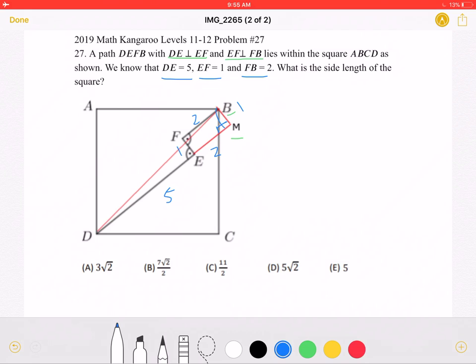So one leg of the triangle, DM squared, plus the other leg squared, must be equal to diagonal DB squared.